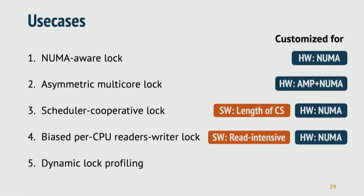We have five use cases in our paper and I'll briefly introduce each of them. Each use case is customized for underlying hardware, software characteristics, or even both. The first one, NUMA-aware lock, is already covered in previous slides. An asymmetric multi-core lock is a use case customized for AMP processors which have fast cores and slow cores together. Scheduler cooperative lock considers the length of the critical section and guarantees fair lock usage across threads. On top of that software customization, we also have a NUMA-aware version of SCL. I'll show a quick demo for this use case shortly after the talk. Biased per-CPU read-write lock is for read-intensive workloads, and dynamic lock profiling lets users profile kernel locks in a fine-grained manner.